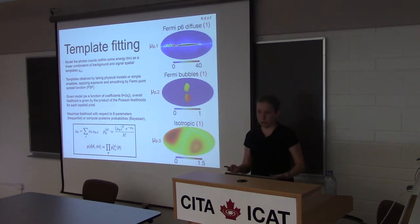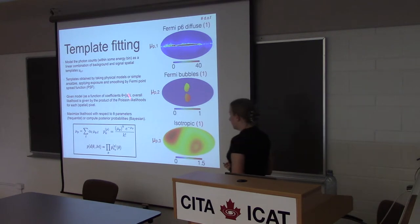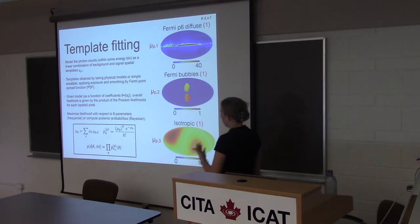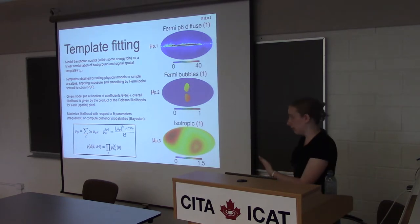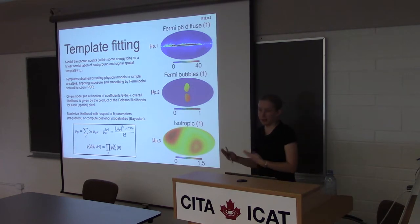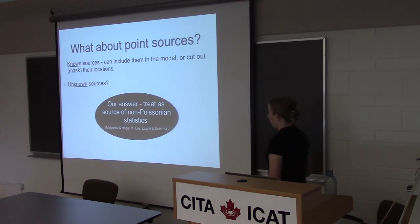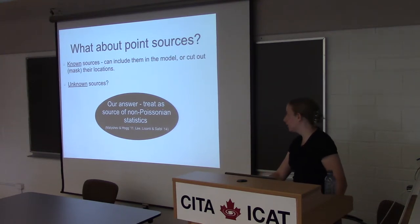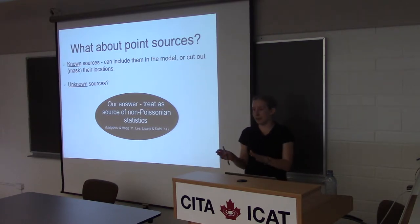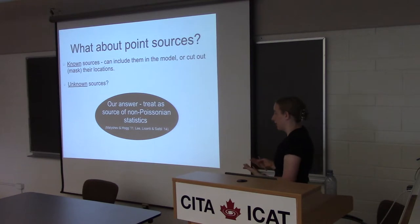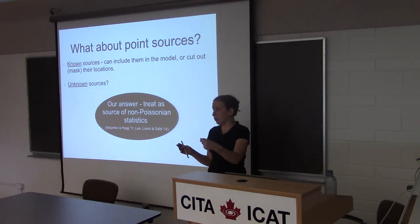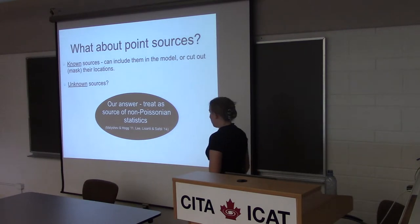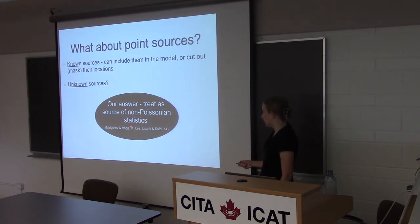We can maximize our likelihood with respect to these parameters and compare maximum likelihoods. We can also do Bayesian analysis, put in priors, and compute posterior probability distributions. The way we normally handle known point sources is either putting them into the model as an additional template, or masking them out. But how would we deal with a population of unknown sources? We don't know where they are — we have a model for some population of unknown sources, we know their overall distribution but not the specific draw from that distribution. In that case, you can treat these sources in a model as a source of non-Poissonian statistics.